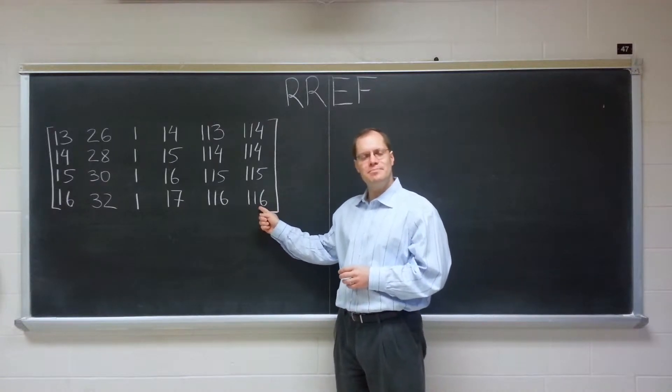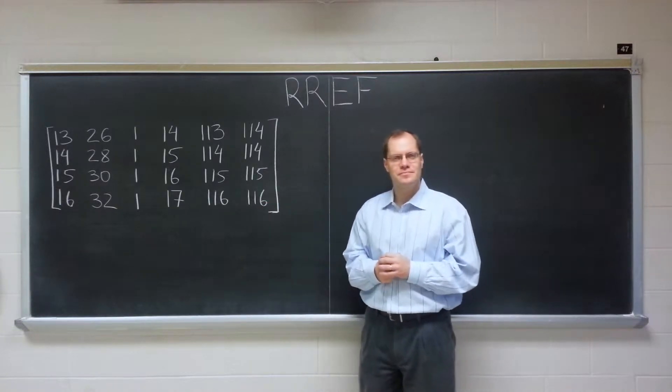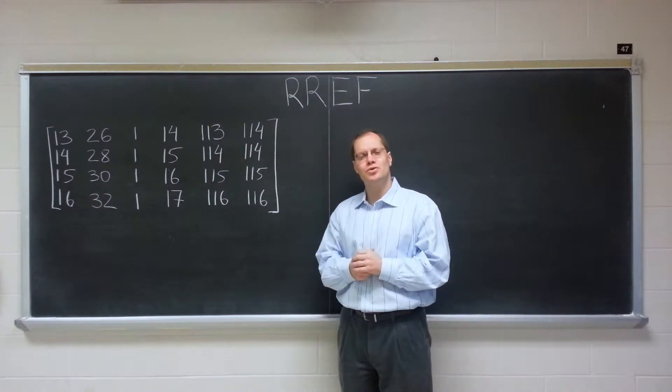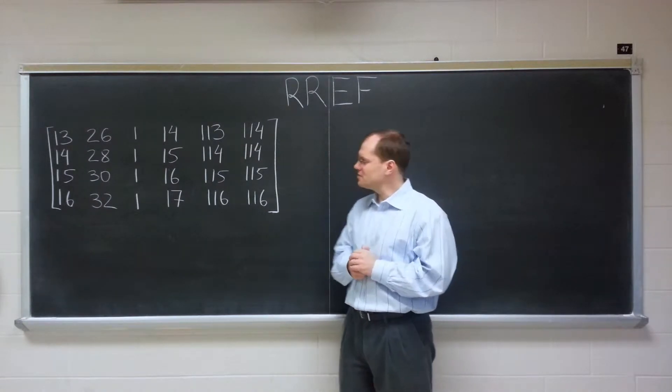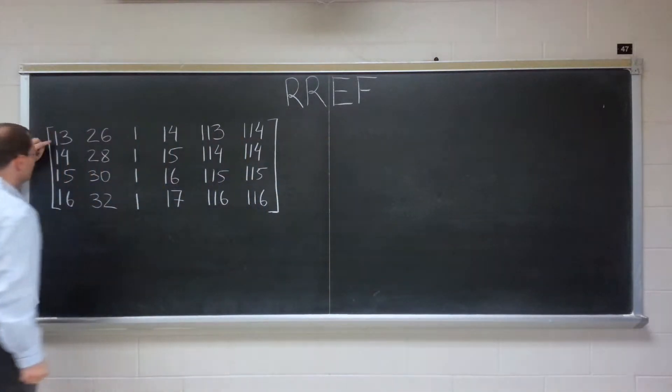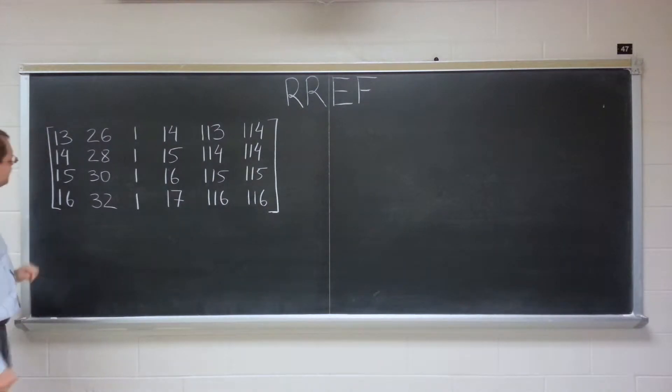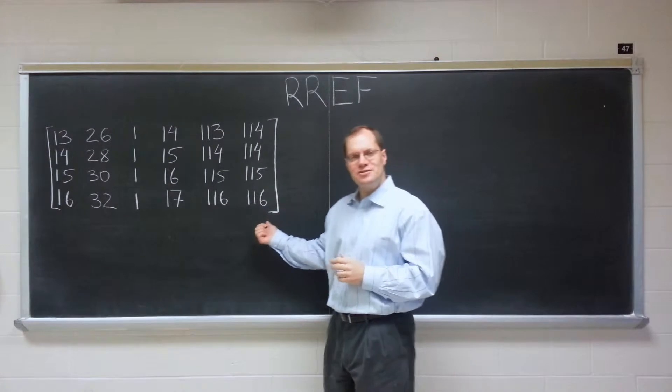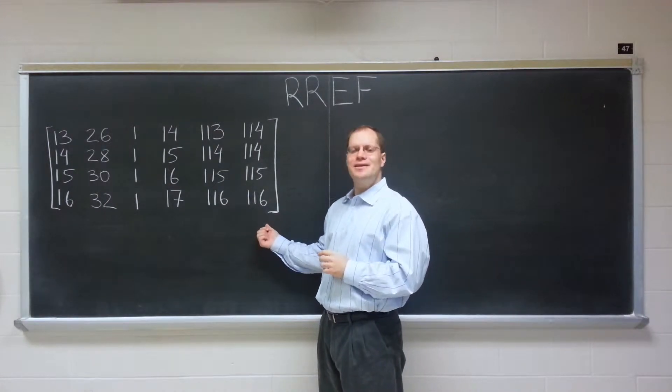Okay, check out the crazy matrix I just cooked up. How would you enjoy the prospect of having to compute the row reduced echelon form for this matrix on a test? How much do you like doing Gauss elimination when the first number is 13?